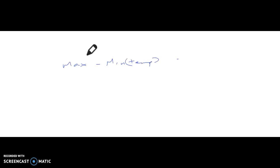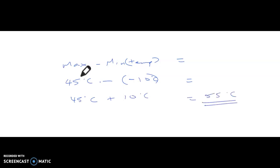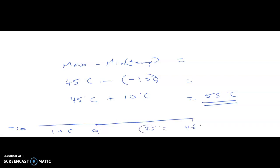The diurnal range is the maximum minus the minimum temperature. For example, in a desert, if the maximum temperature is approximately 45°C and the minimum temperature is minus 10°C, then 45 minus (−10) equals 55 degrees Celsius. So in one given day, temperatures can have a range of 55 degrees Celsius.